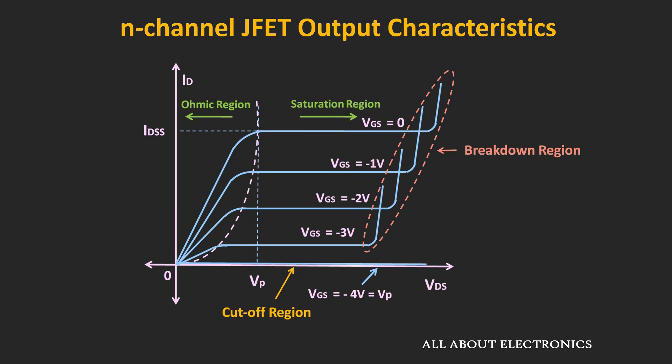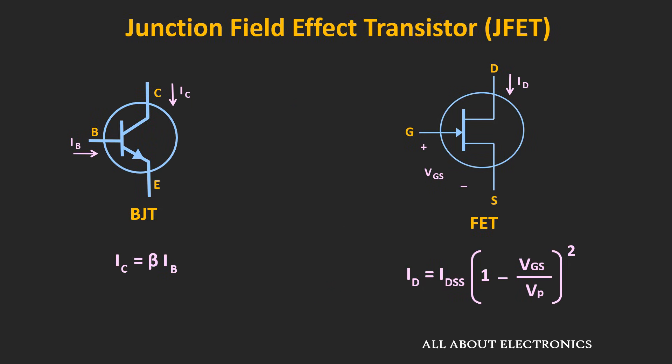For the JFET, if we keep this voltage Vds constant, and for the different values of Vgs, if we plot this current Id, then we will get the transfer characteristic of this JFET. Now for the BJT, the relationship between the output collector current and the input base current is linear, and it can be given by the expression IC is equal to β times IB. But for the JFET, the relationship between this input voltage Vgs and the drain current Id is non-linear.